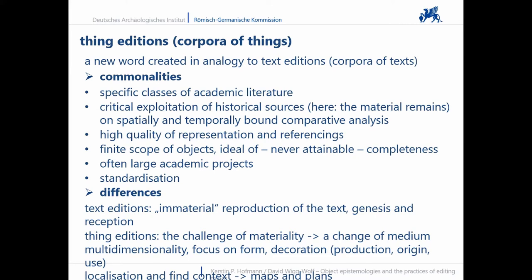The focus of text editions is generally on the reproduction of the original text, genesis and reception, whereby the text is often regarded as immaterial. Thing editions, on the other hand, present the challenge of how materiality can be properly represented in spite of the change of medium. The aim is to record things, and they are multi-dimensional. The focus is often on form and decoration, sometimes also on production, origin and use. Details on the localization of the finds and their context can also play an important role and are often the basis for maps and datasets.